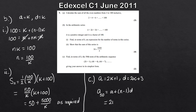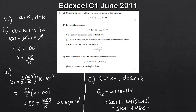Using the nth term formula: A50 equals A plus (N minus 1) times D. The first term is 2K plus 1, N minus 1 is 50 minus 1 which is 49, and the common difference is 2K plus 3. So: 2K plus 1 plus 49 times (2K plus 3). That gives 2K plus 1 plus 98K plus 147. Collecting terms: 2K plus 98K is 100K, and 1 plus 147 is 148. So the 50th term is 100K plus 148.